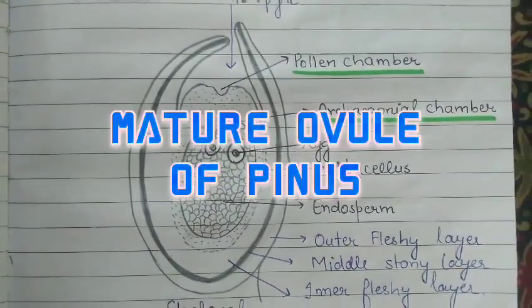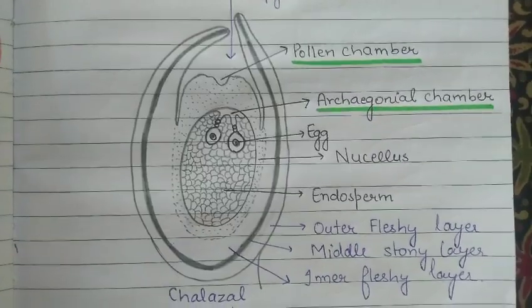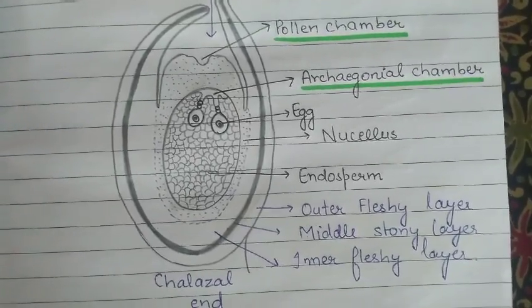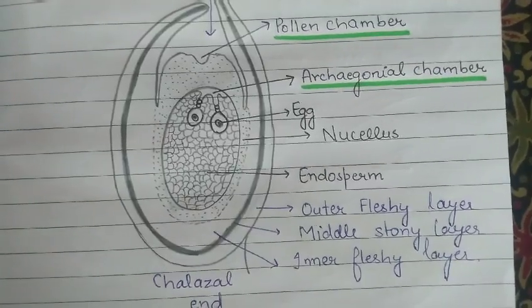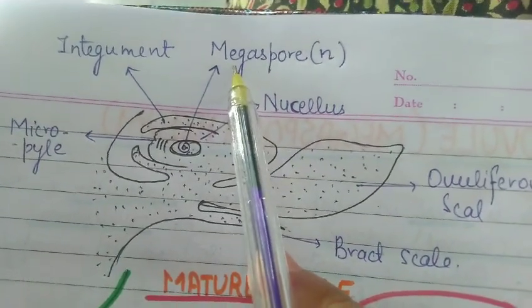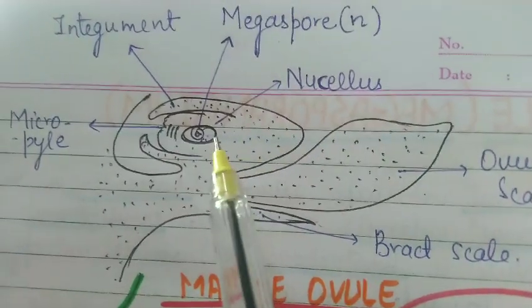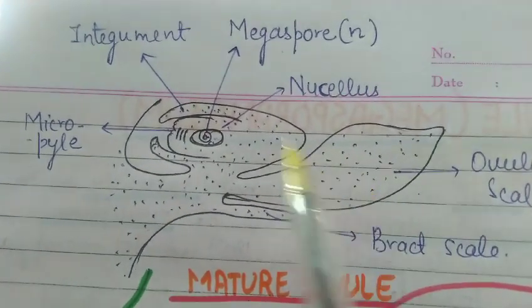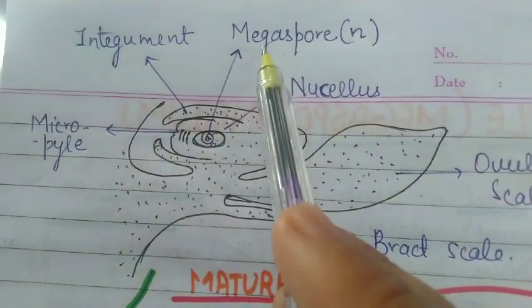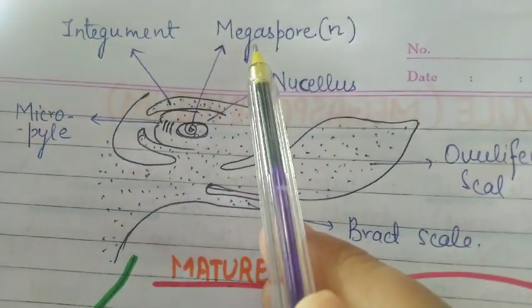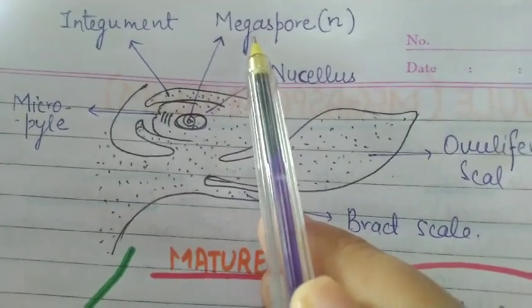Hey friends, in this video we are going to study about the mature structure of ovule of Pinus. In the previous video we covered how the formation of archegonia takes place and how the formation of female gametophyte, that is endosperm, takes place. The ovule develops a single functional megaspore which is haploid in nature, present on the ovuliferous scale, consisting of nucellus and a single functional megaspore. This megaspore undergoes development leading to the formation of endosperm or female gametophyte, and that endosperm also develops the archegonia.